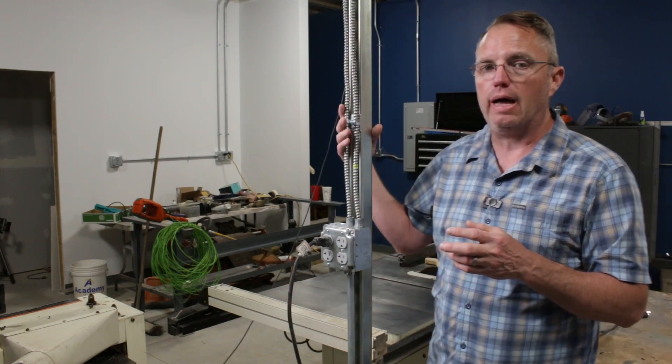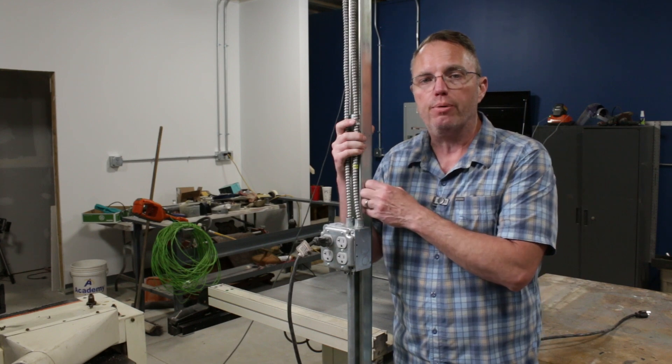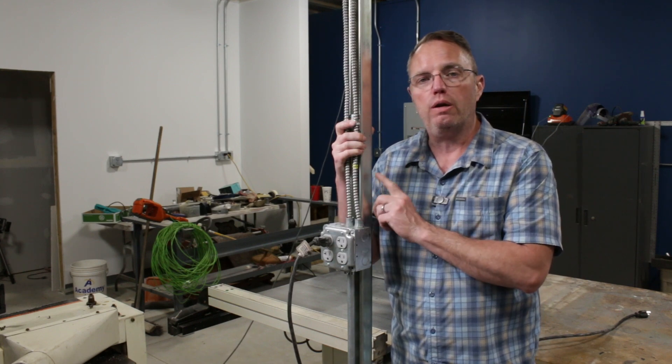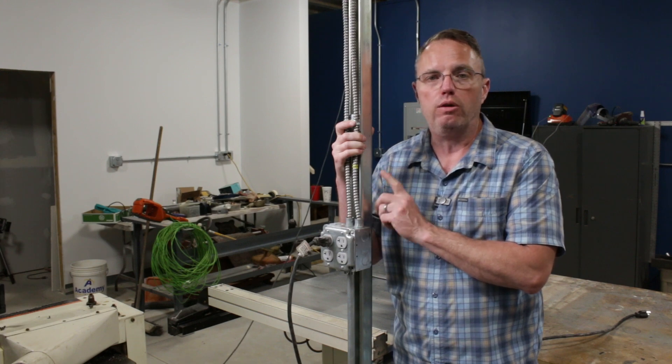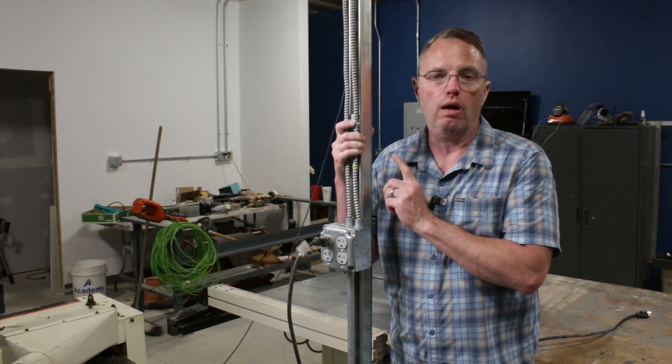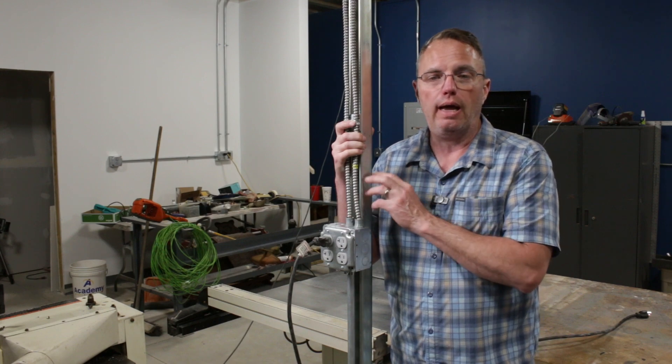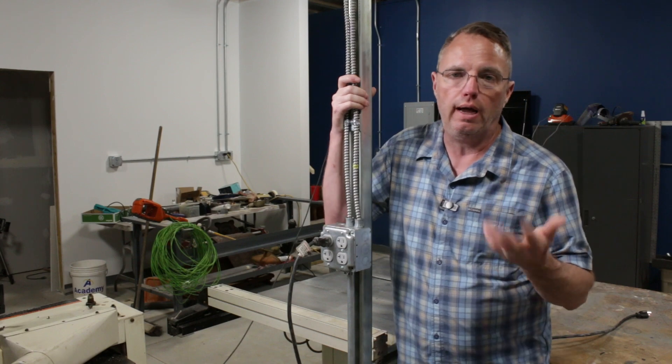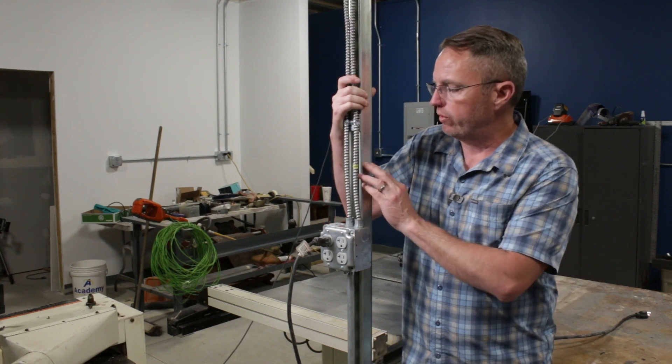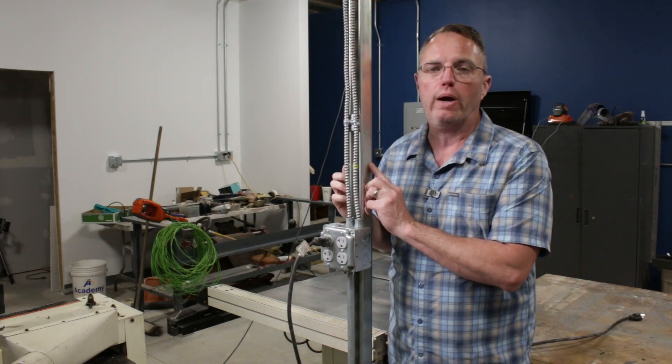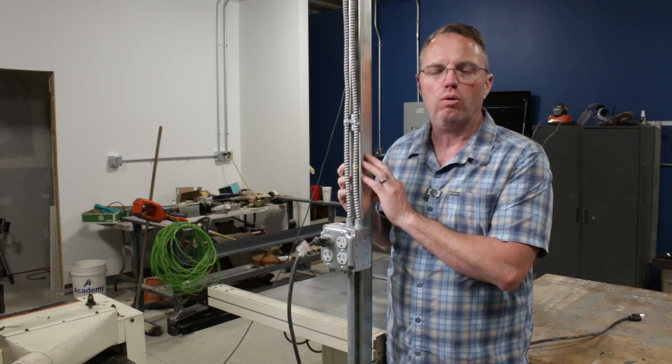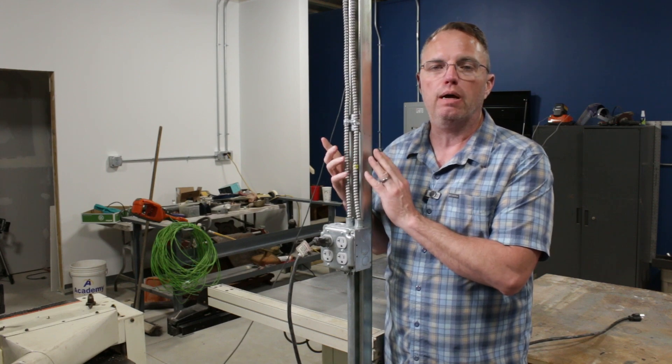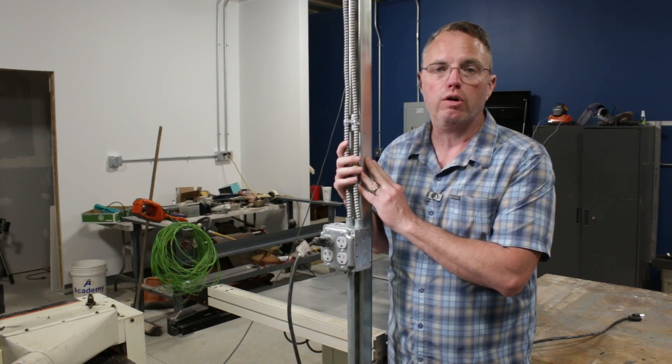So what I finally decided on was to build an electrical drop and this one is built out of Unistrut. Unistrut is an electrical product and it's sold in the big box stores and electrical supply stores. It's basically a square U-channel with bolt slots cut in it.